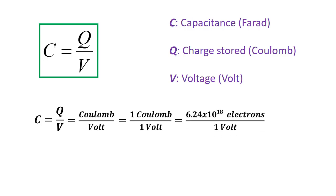For example, if 1 volt and 1 coulomb of charge can be stored, this is equal to 1 farad. In other words, a capacitor that can store 6.25 times 10 to the power of 18 electrons with a voltage of 1 volt is worth 1 farad.